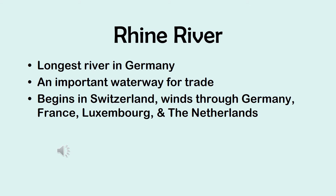Now a couple of the rivers in Europe — I'm going to talk about two during this presentation. The first is the Rhine River and the other is the Danube River. The Rhine River is the longest river in Germany and is an important waterway for trade.